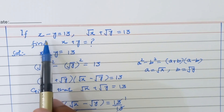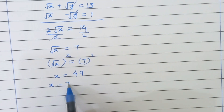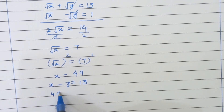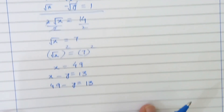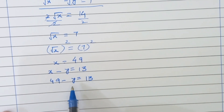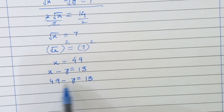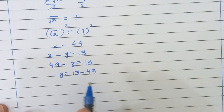Initially we are given that x minus y equals 13. Taking this equation, x minus y equals 13, and substituting the value of x as 49 — shifting 49 to the right-hand side, we get minus y is equal to 13 minus 49.